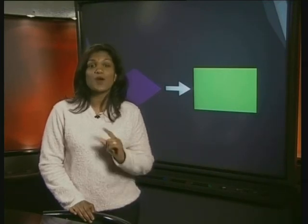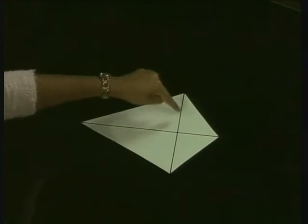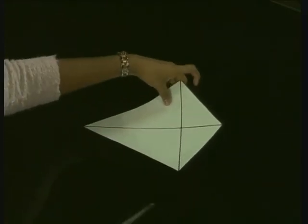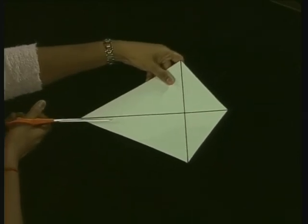Right, here we go. Here I have a cutout of a kite. I've drawn in the long diagonal as well as the short diagonal. When I take my pair of scissors and cut along the long diagonal like this...